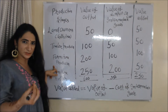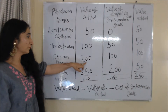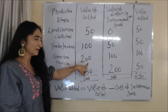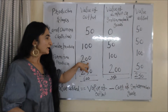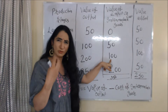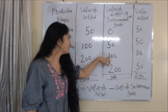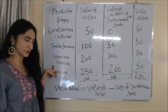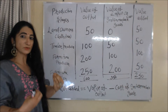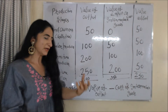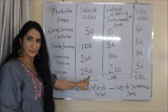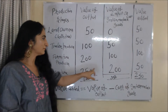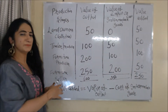The furniture producer makes furniture from this timber and sells to the furniture seller at rupees 200. The price of output is 200, and cost of input is 100 rupees — the price at which he bought timber from the timber producer. So 200 minus 100 equals 100. Thus 100 rupees value is added by the furniture producer. The furniture seller sells this furniture to the customer at rupees 250. Value of output is 250 and cost of input is 200. So 250 minus 200 equals 50. Thus 50 rupees is value added by the furniture seller.